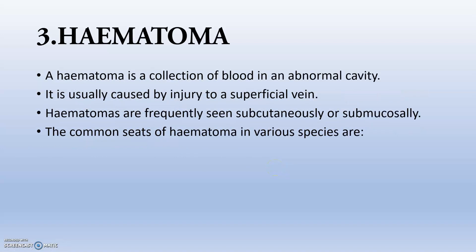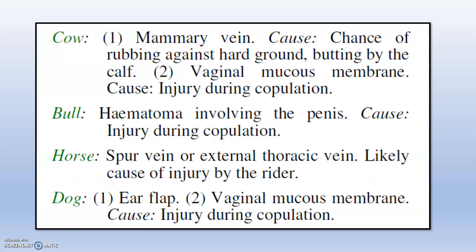Hematoma is a collection of blood in an abnormal cavity, caused by injury to a superficial vein. Hematomas are frequently seen in the subcutaneous or mucosal areas. Common sites by species: in cows — mammary vein and vaginal mucosal membrane; in bulls — hematoma involving the penis due to injury during copulation; in horses — the saphena vein or external thoracic vein, mainly due to riding problems; in dogs — the ear flap, and vaginal mucosal membrane during copulation.